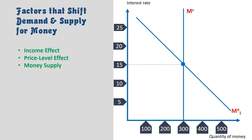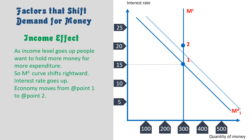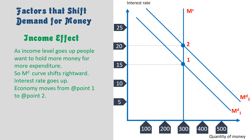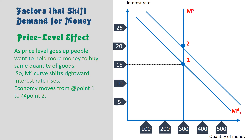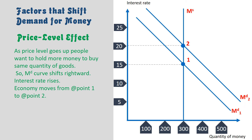Now we are going to learn the factors that shift demand and supply for money. As income level goes up, people want to hold more money for more expenditure, so the MD curve shifts rightward and interest rate goes up — the economy moves from point 1 to point 2. Similarly, as price level goes up, people want to hold more money to buy the same quantity of goods, so the MD curve again shifts rightward and interest rate rises.